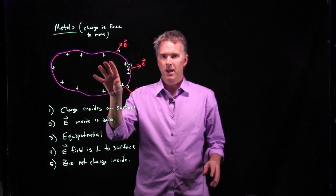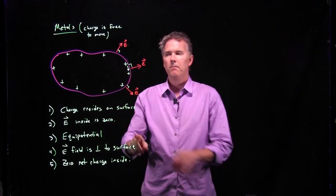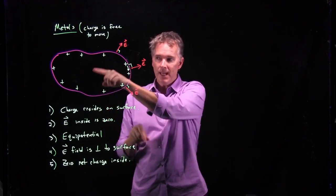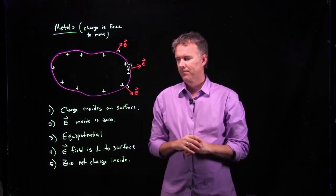Now, we know that a metal is made up of atoms which have protons and electrons. But what we're saying is they all balance out perfectly evenly in the interior to give a net charge of zero.